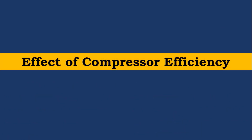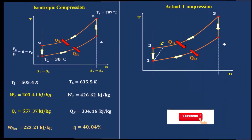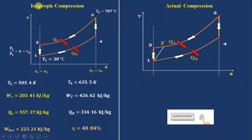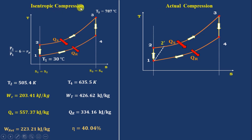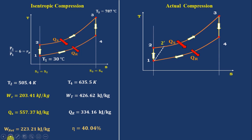First, we will discuss the effect of compressor efficiency on the gas turbine engine. Before that, we need to understand what is meant by isentropic compression and actual compression. In isentropic compression, entropy remains constant — that is, change in entropy is zero — which means this process is considered a reversible process, with no irreversibility of the system. For this compression, we found T1 given in the question, T2 calculated, T3 given, and T4 calculated, along with compressor work, turbine work, heat addition, heat rejection, net work done, and efficiency — all found in the last lecture.